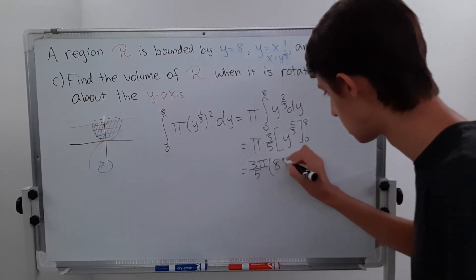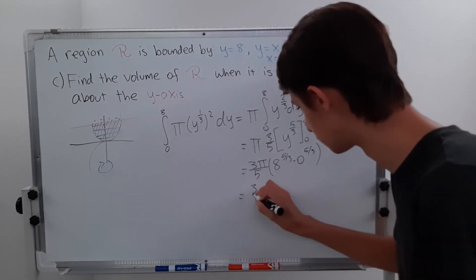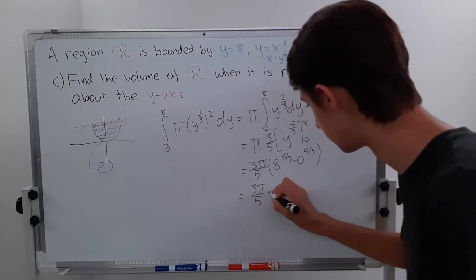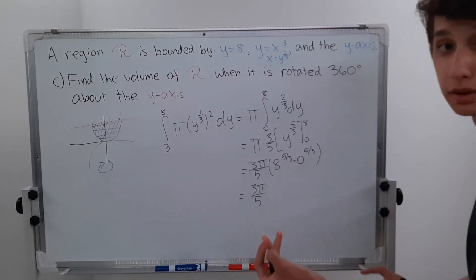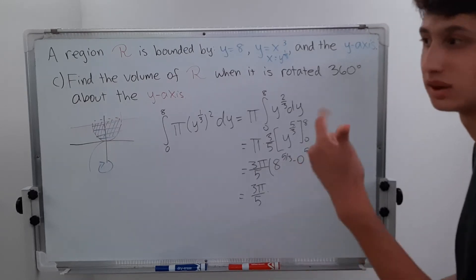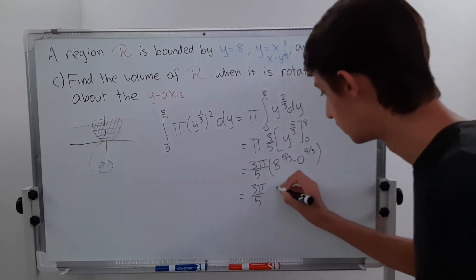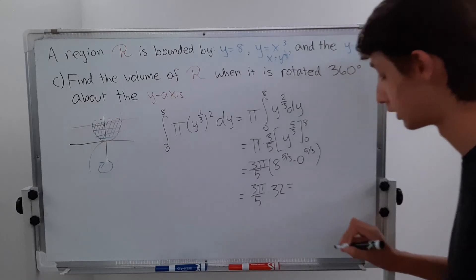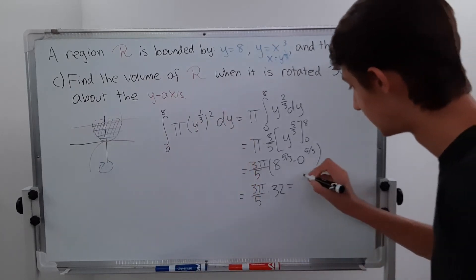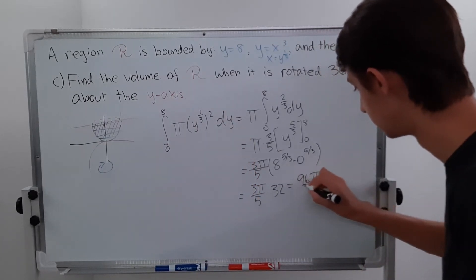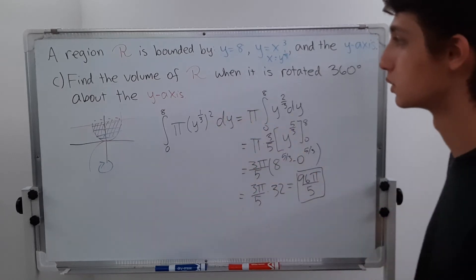This is 3π/5 times (8 to the 5/3 minus 0). You can think of 8 to the 5/3 as: take the cube root of 8, which is 2, then raise to the 5th power: 2, 4, 8, 16, 32. So it's just 32. Then 3 times 32 is 96, giving us 96π divided by 5. And that is our answer for revolving the region about the y-axis.